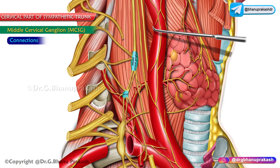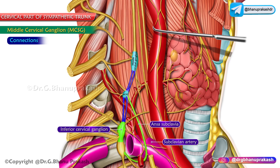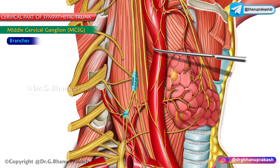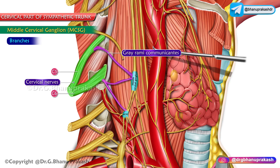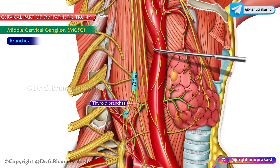The middle cervical ganglion is connected with the inferior cervical ganglion directly and also through a loop that winds around the subclavian artery, called the ansa subclavia. The gray rami communicantes are given to the ventral rami of the fifth and sixth cervical nerves.